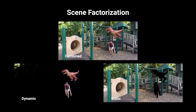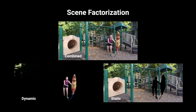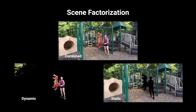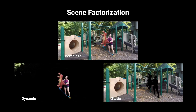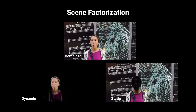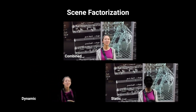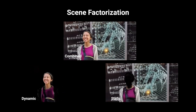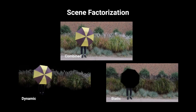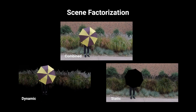Our method factorises scenes into a static and a dynamic component with two separate representations, and accurately captures both stationary and moving scene elements. These swaying bushes are particularly challenging because of their subtle motion.